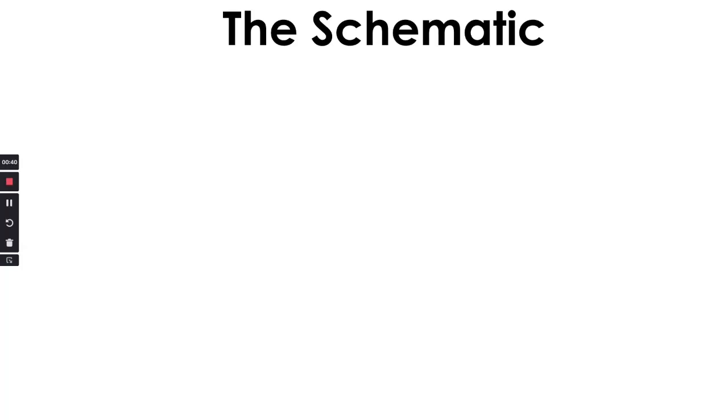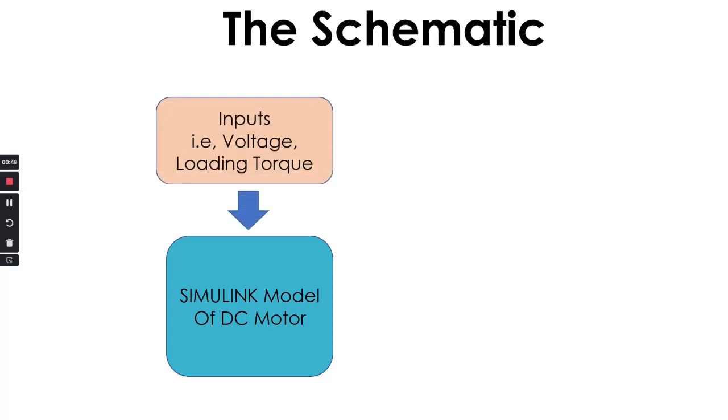The schematic of this entire series is going to be like this: first we are going to create the Simulink model of the DC motor, then we'll have to give it some inputs like the voltage or the load torque.